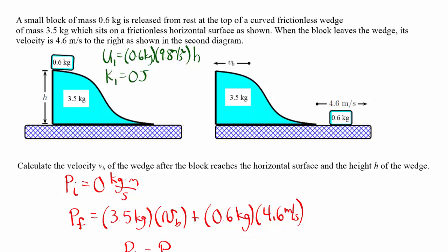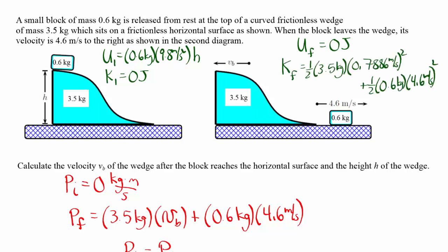When the block reaches the bottom of the ramp, the potential energy of the block is zero, and the kinetic energy we have is the kinetic energy of both the block and the wedge. Notice we don't worry about potential energy in the wedge because the height of the wedge never changes — the only thing changing height is the block, so there's only potential energy stored in the block.